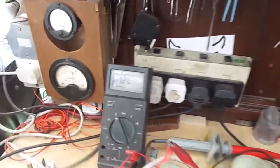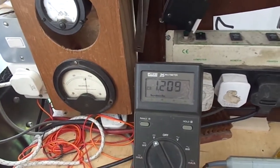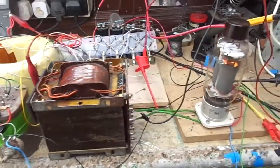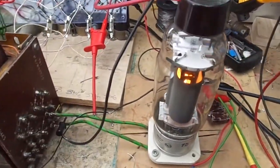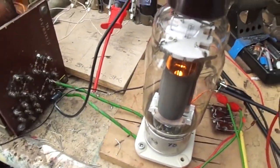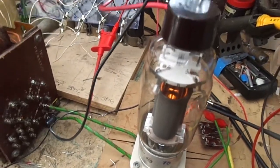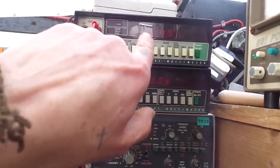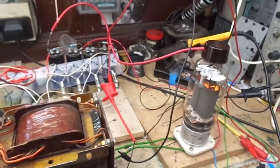So now we are reading 1200 volts EHT. You can see the old filament is going very brightly. We are reading 600 volts on the screen grid. Let's crank it up a bit more.